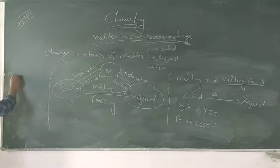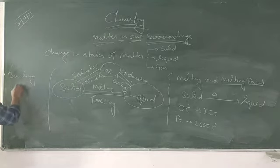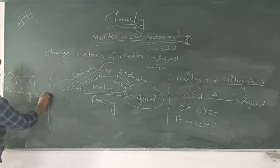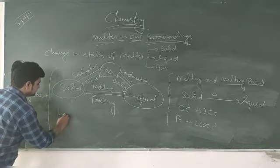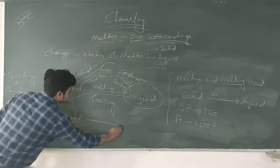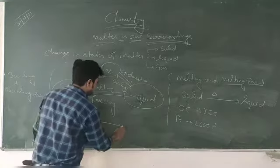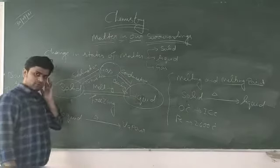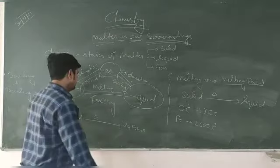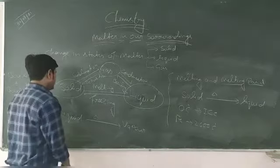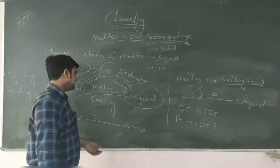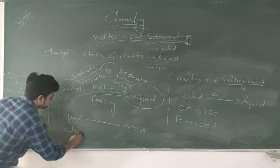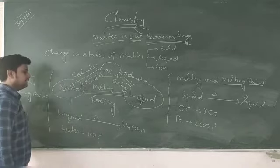The next process is boiling and boiling point. When liquid is heated, it is converted into vapor. This process is called boiling, and the temperature at which liquid starts boiling is called the boiling point. The boiling point of water is 100 degrees Celsius.